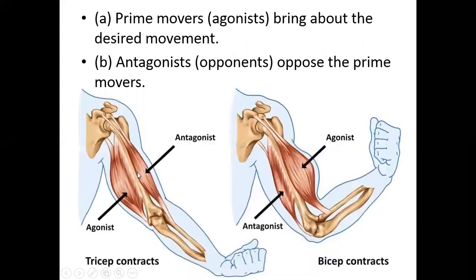Prime movers are called agonists — they bring about the desired movement. For example, when a person tries to extend the forearm, the triceps contracts and is the agonist. The muscle opposing the agonist is called the antagonist; here it is the biceps. Conversely, when a person tries to flex, the biceps is the agonist and the triceps is the antagonist.